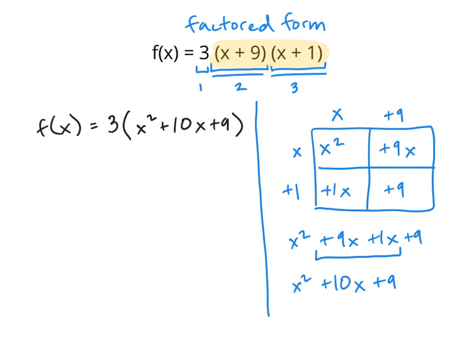We still have some multiplication to go. And to multiply the 3 times this new expression I've created, we're going to use the distributive property. According to the distributive property, the 3 needs to be multiplied by every term within the parentheses. 3 times x squared is 3x squared, 3 times 10x is 30x, and 3 times 9 is 27.